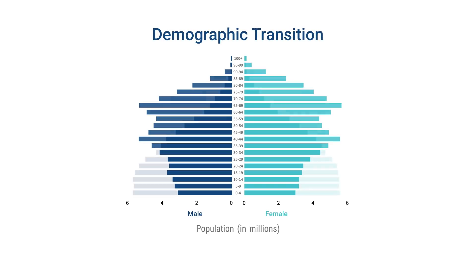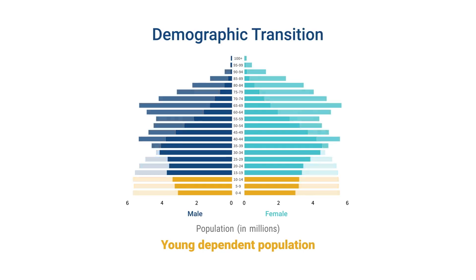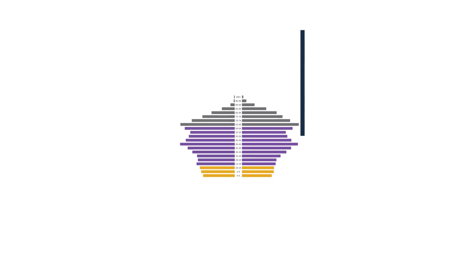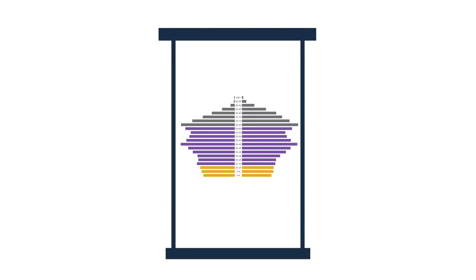With fewer births each year, a country's young, dependent population shrinks relative to the population of working-age adults. The decline in the child dependency ratio creates a window of opportunity for countries to increase investments in social and economic policies that fuel economic growth.